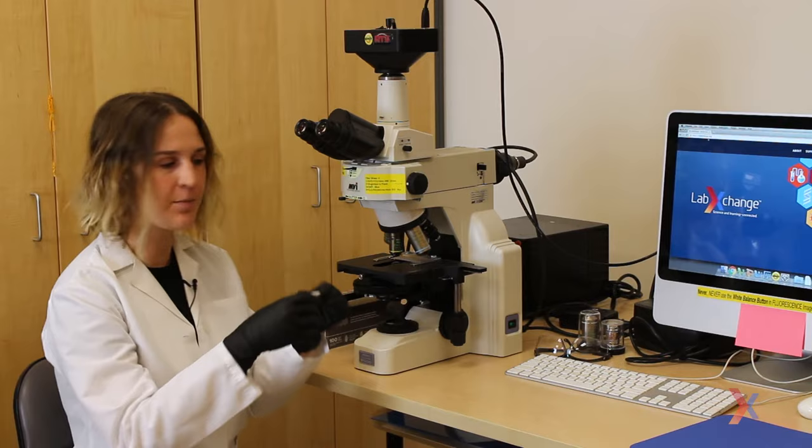Hello, today we're going to learn how to do fluorescence microscopy. We're starting with a slide that has some cells on it that are in a mounting medium with a piece of cover glass sitting on top.